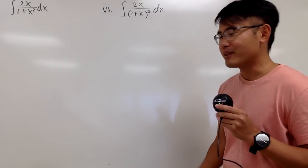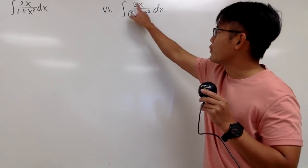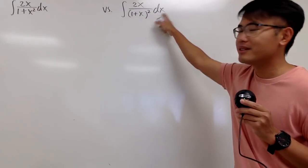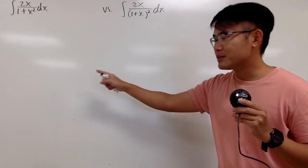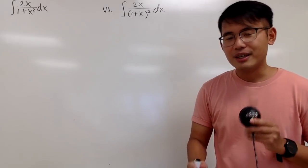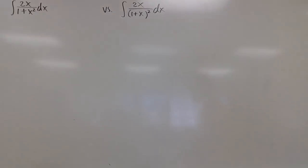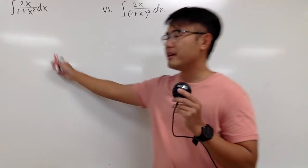It looks similar, but of course it's different. This is the integral of 2x over parentheses with 1 plus x inside, and then to the second power dx. Which of these do you guys think is easier? Be sure to pause the video and do the easier one first. Okay, in my opinion,